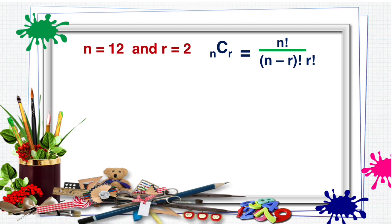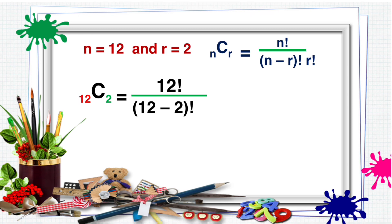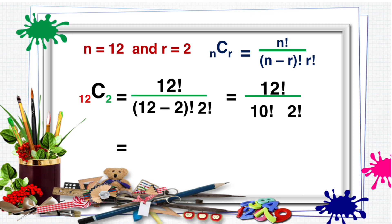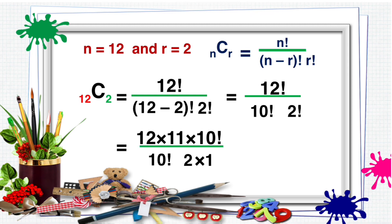Since N is equal to 12 and R is equal to 2, substitute the values so that the combination of 12 objects taken 2 at a time is equal to 12 factorial all over the quantity of 12 minus 2 factorial times 2 factorial. Then write 12 factorial all over 10 factorial times 2 factorial. Then split 12 factorial into 12 times 11 times 10 factorial, all over 10 factorial. Multiply 2 times 1 from 2 factorial, then cross out 10 factorial in the numerator and denominator.